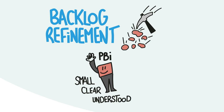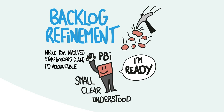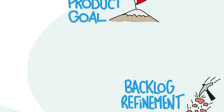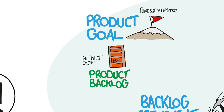Backlog items that are small enough to be completed in a sprint are considered ready. The whole team is involved, stakeholders can be invited, and the product owner is accountable. The product owner defines work for the team using the product backlog. The product goal describes a future state of the product, and the rest of the product backlog emerges to define what will fulfill the product goal.